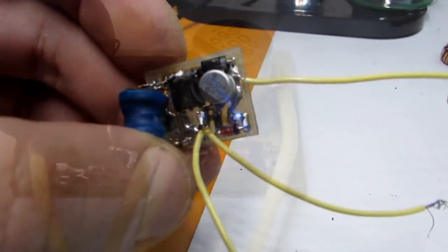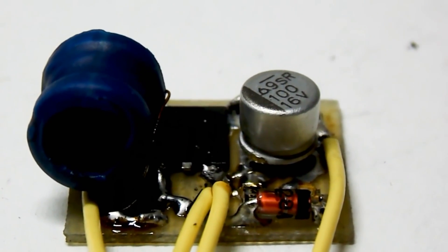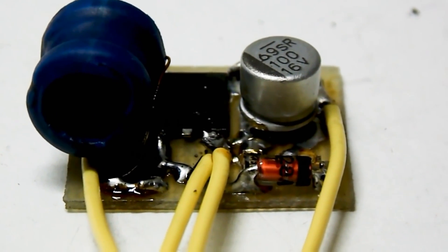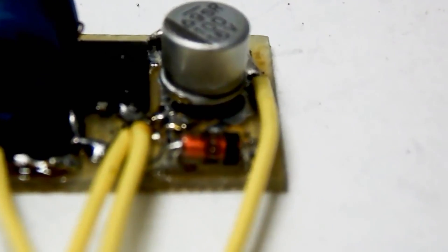I used 3.3 Volt Zener diode and the output voltage varies from 5 to 5.5 Volt. It is enough to charge virtually all modern portable devices.